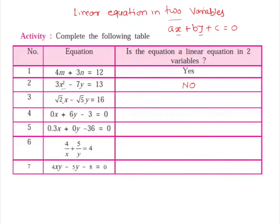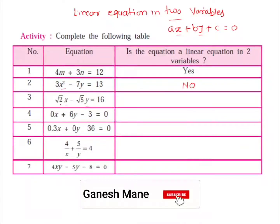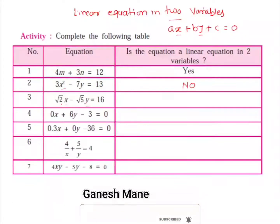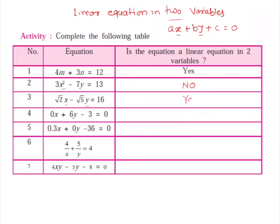Next equation: √2 times x minus √5 times y equals 16. Here again two variables x and y are present. Though √2 and √5 are irrational numbers, they are only the coefficients of the variables x and y. We can have these coefficients be any real number, so √2 and √5 are acceptable. Therefore, √2x minus √5y equals 16 is a linear equation in two variables.